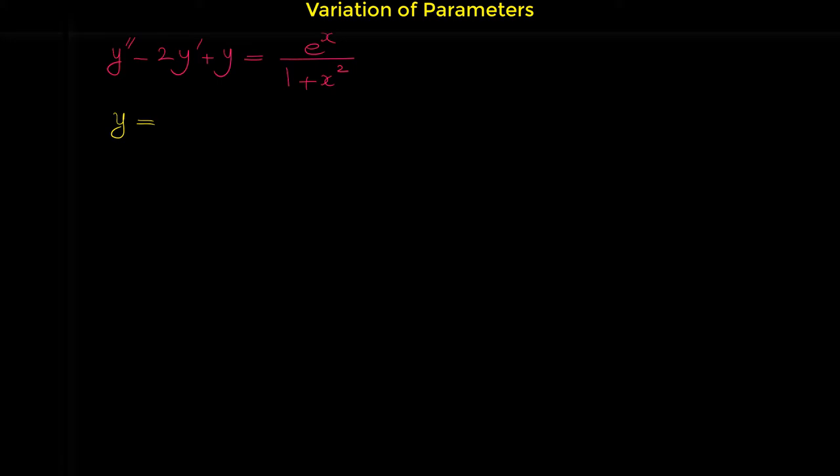The general solution of a non-homogeneous differential equation is the sum of the complementary solution and the particular solution. Here in this video, we want to see how we can find the particular solution with the method of variation of parameters. But before finding the particular solution, we first have to find the complementary solution.